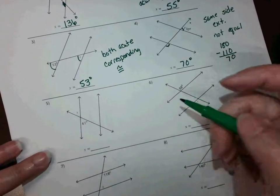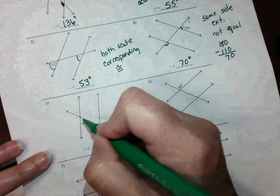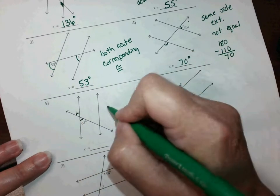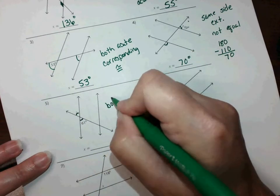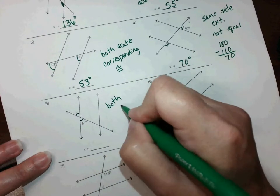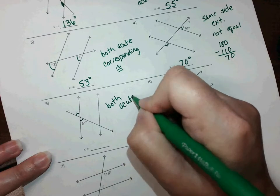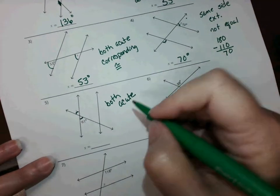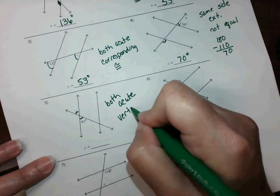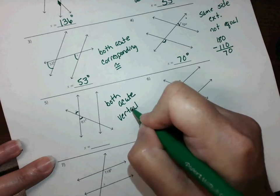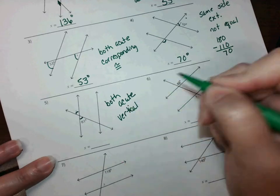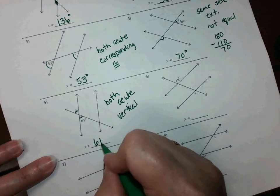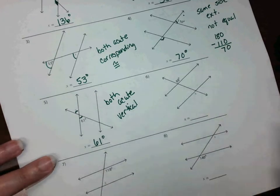I see this angle at 61 and the other — they're both acute and they're also vertical angles. So if this one's 61, the other one is 61.